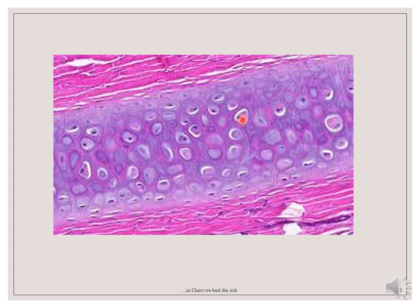Where can elastic cartilage be found in the body? It is mostly found in the external ear — that means the pinna — and the external auditory canal. It is also seen in the epiglottis and the wall of the Eustachian tube.